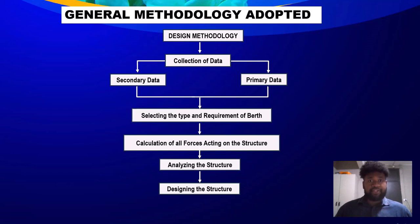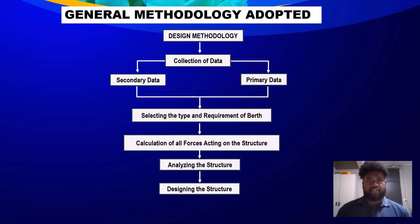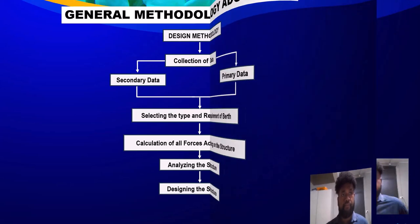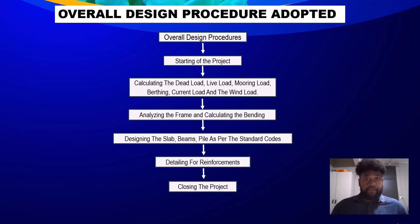Greetings everyone, my name is Harrison Triff and today I will be presenting on the general methodology adopted. First we have the design methodology, then the collection of data, which has been split into two parts: the collection of secondary data and the collection of primary data. Then we move on to selecting the type and requirement of berth, moving on to the calculation of all forces acting on the structure, analyzing the structure, and designing the structure. The overall design procedure starts with the calculation of dead load, live load, mooring load, berthing current load, and wind load. Then analyzing the frame and calculating the bending, designing the slab, designing the beams and piles as per the standard codes, then detailing for reinforcements, and closing of the project.